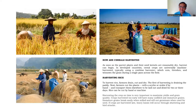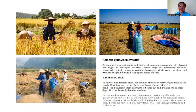For cereals, as soon as the parent plant and seed kernels are reasonably dry, harvest can begin. In developed countries, cereal crops are universally machine-harvested, typically using a combined harvester which cuts, threshes, and winnows the grain during a single pass across the field — cutting and bagging in one operation.